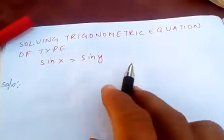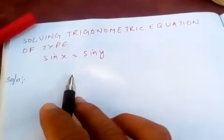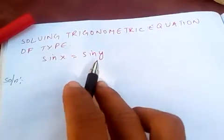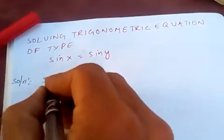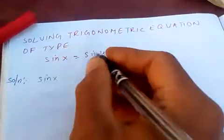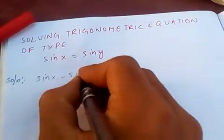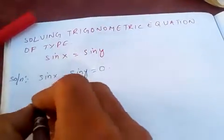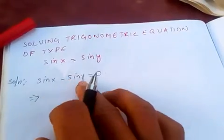Today I'm going to solve a trigonometric equation of the type sin x equals sin y. Rearranging this, we transfer sin y to get sin x minus sin y equals 0.